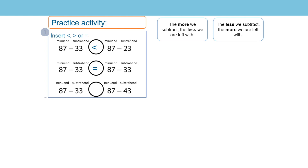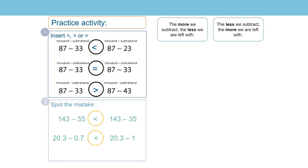Let's look at the final one. On the final set of calculations, the subtrahend is 10 more on the calculation on the right. And I know the more we subtract, the less we are left with. So I know that this calculation would be less than 87 subtract 33 as the subtrahend is more. So this time I am going to insert the greater than symbol. 87 subtract 33 is greater than 87 subtract 43. How did you get on with those ones? Well done.